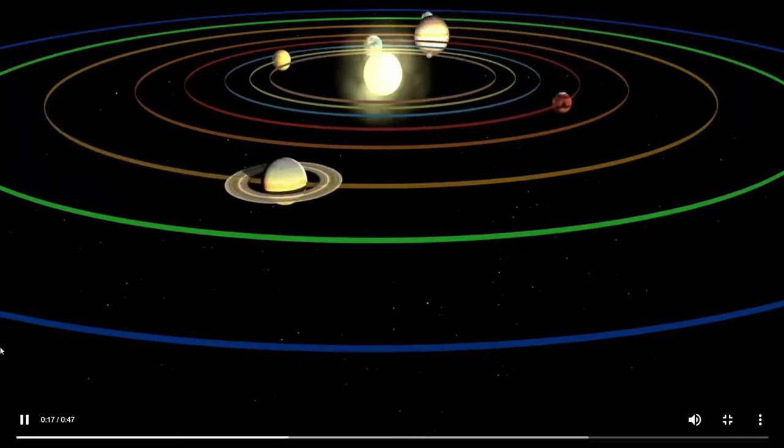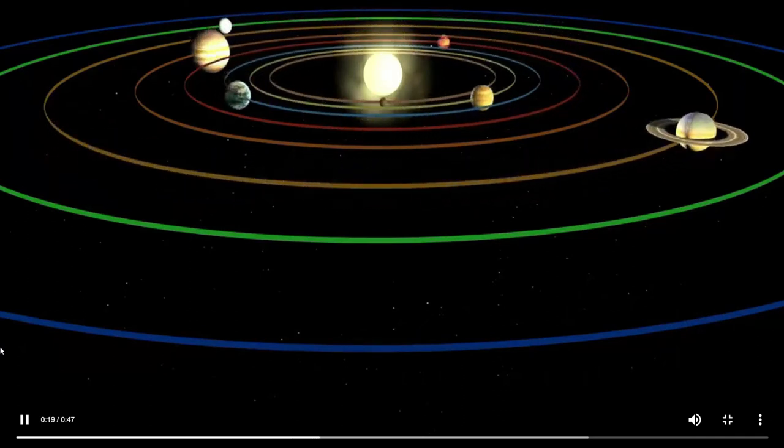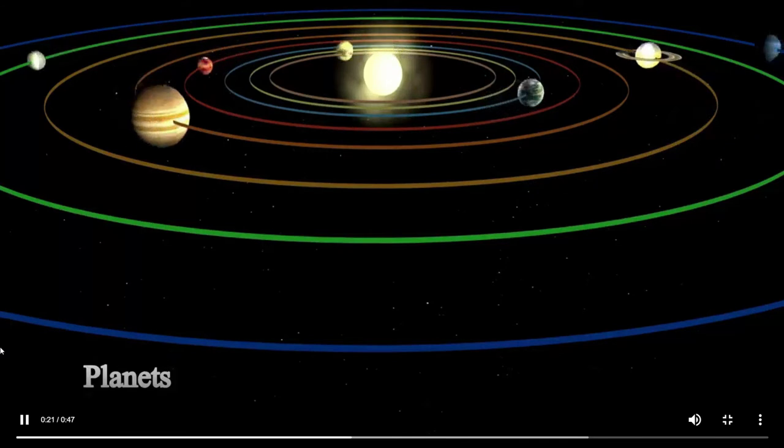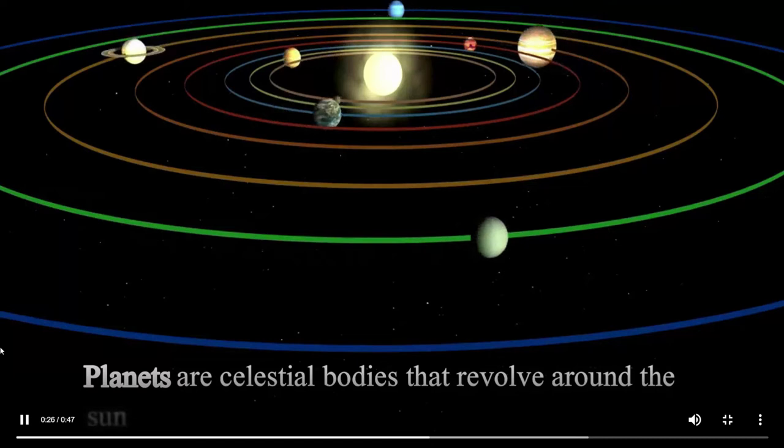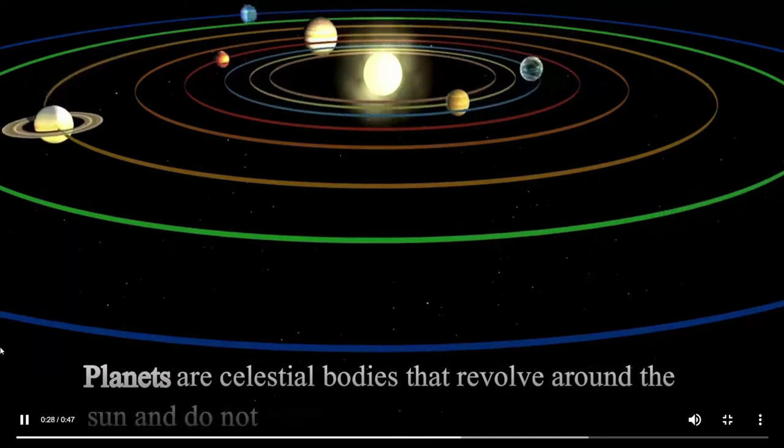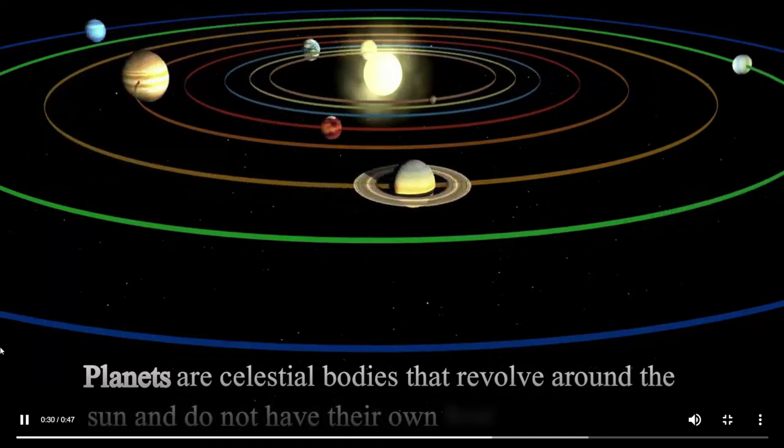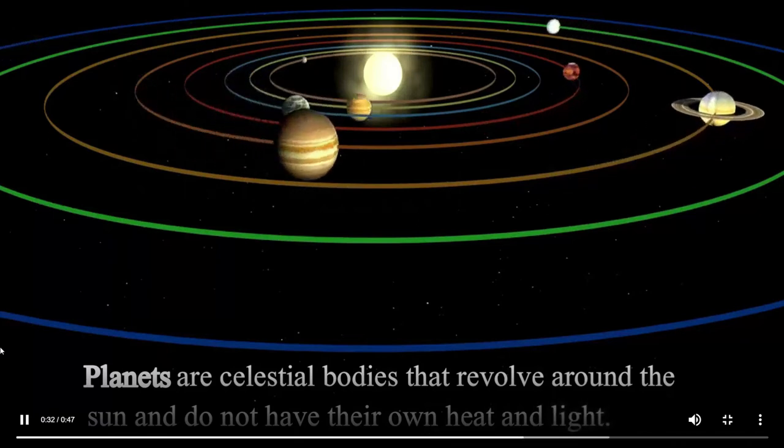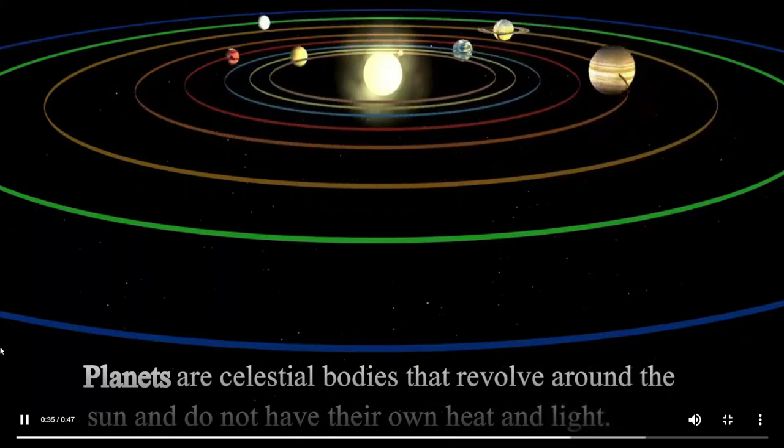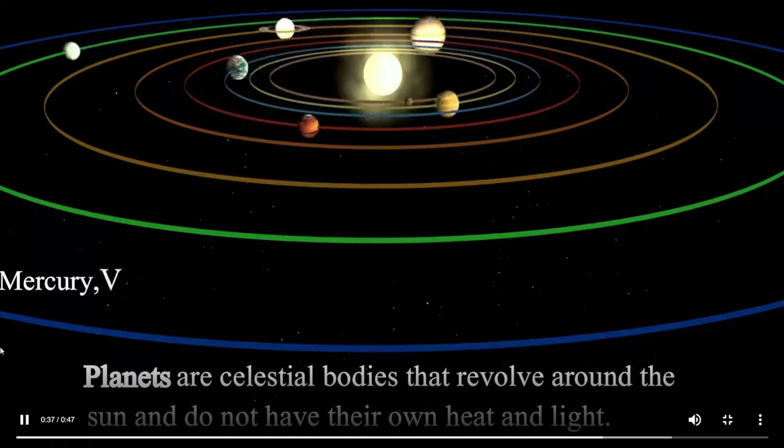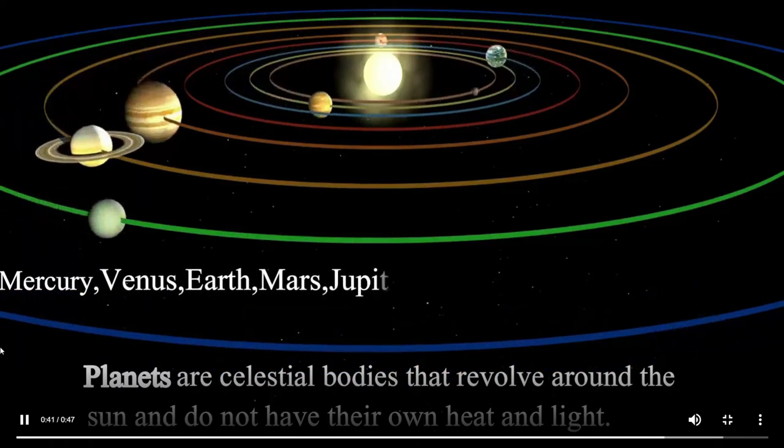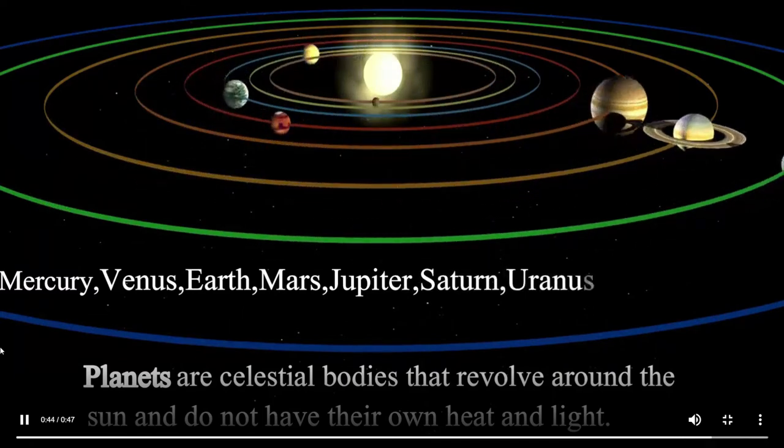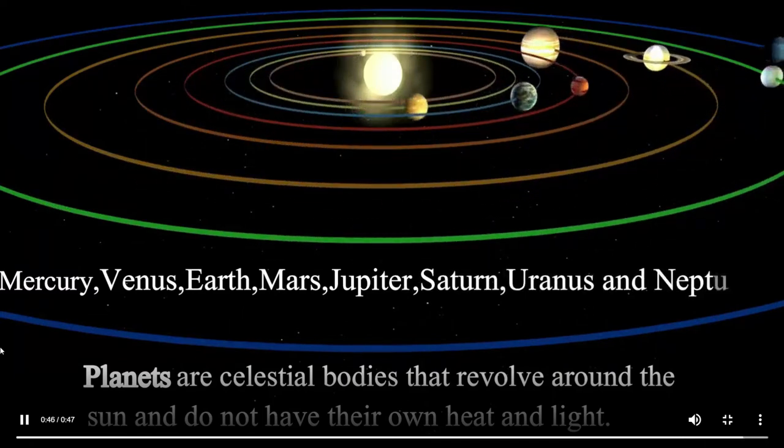Let us know about planets. Planets are celestial bodies that revolve around the sun and do not have their own heat and light. The eight planets are Mercury, Venus, Earth, Mars, Jupiter, Saturn, Uranus, and Neptune.